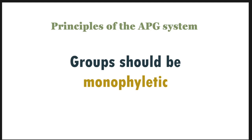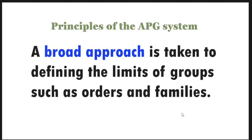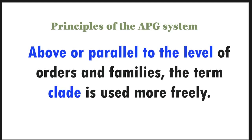That means they should have a common ancestor. A broad approach is taken to defining the limits of groups such as orders and families. A lot more information is considered — it is not only molecular, though it is based on molecular data, especially chloroplast DNA along with mitochondrial and nuclear DNA, but it also deals with other branches such as cytological studies, chemo-taxonomic studies, and wood anatomical studies, to limit the orders and families and to identify lineage. Above or parallel to the levels of orders and families, the term clade is used more freely.